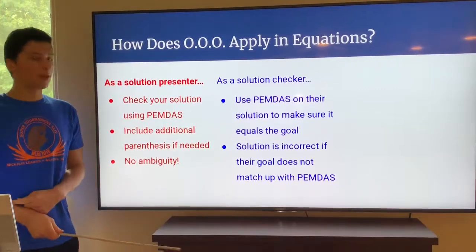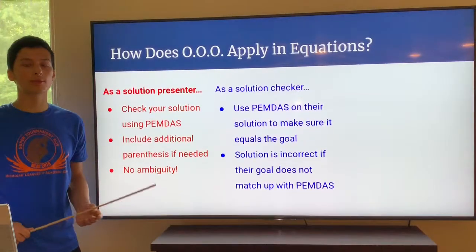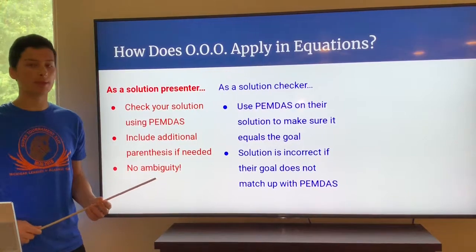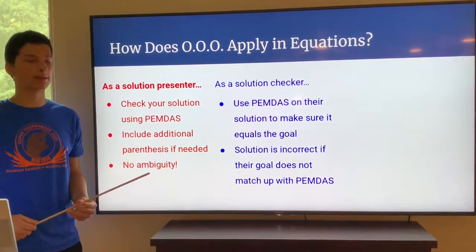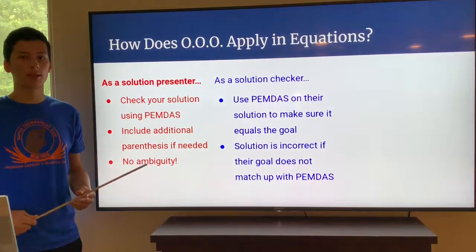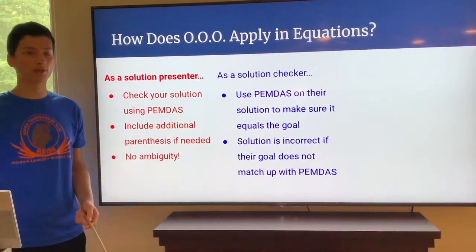As a solution checker, use PEMDAS and check their solution. If their solution does not meet PEMDAS, it is incorrect. You can receive six points by saying that they didn't use PEMDAS, and that's how you can win. So it's a very quick way to win.